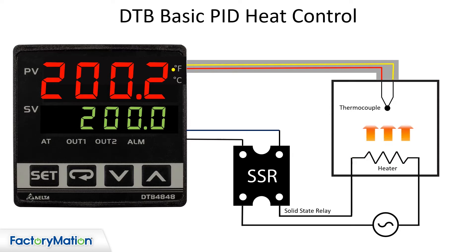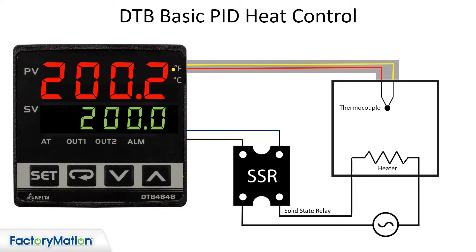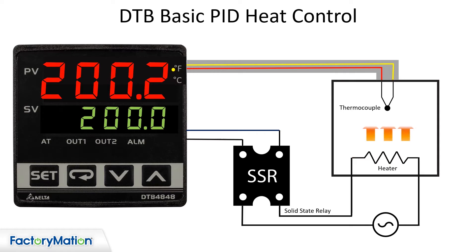A solid state relay is recommended due to the frequent on-off pulses the relay will receive from the DTB. The DTB uses PID calculations to determine the on-off ratio of the output in order to maintain a set temperature.